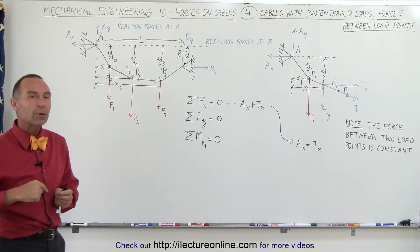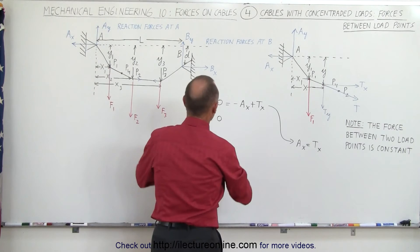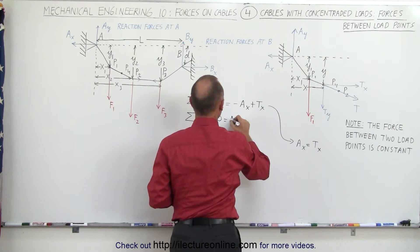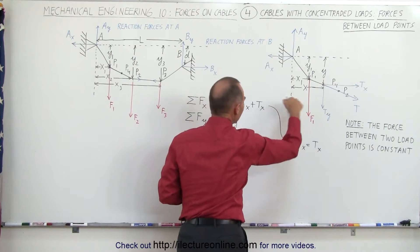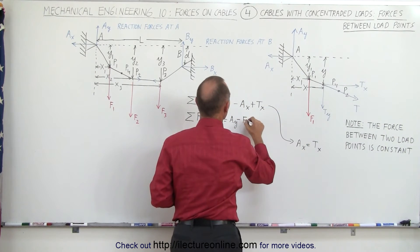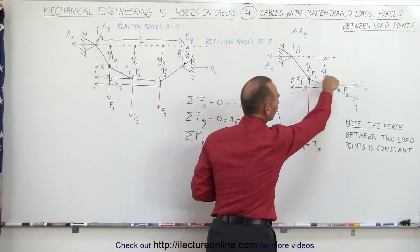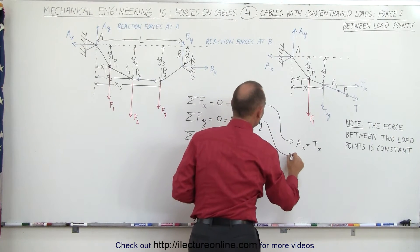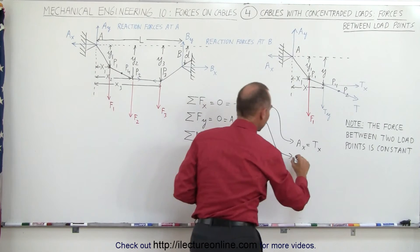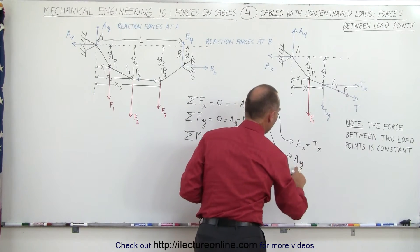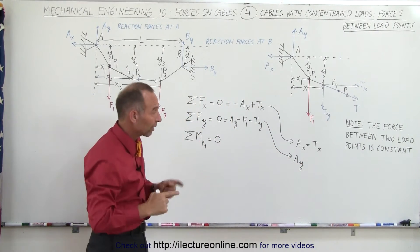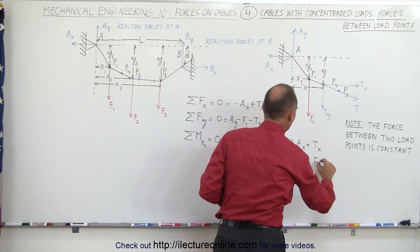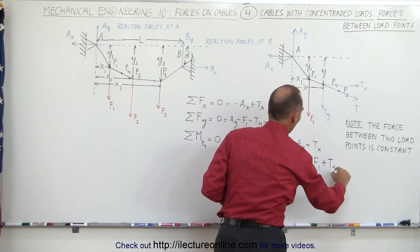Let's now sum up all the forces in the y direction. We have an A sub y in the positive direction, we have a negative F sub 1, and we have a negative T sub y. And then if we solve this equation for A sub y, we get A sub y, that is the reactionary force in the y direction, in the vertical direction at the support point A, has to be equal to F sub 1 plus T sub y.